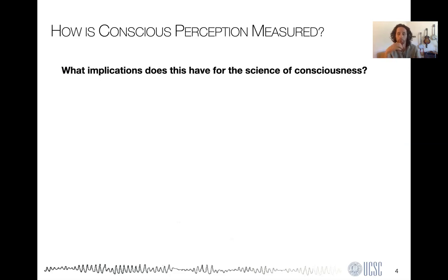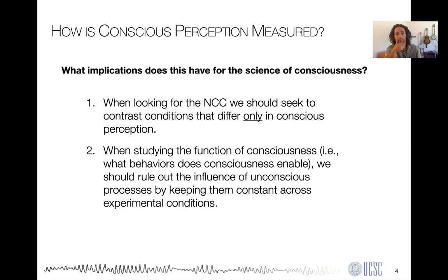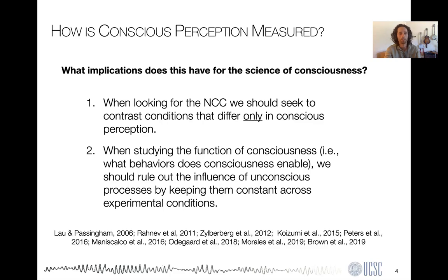So conscious perception is not equal to the capacity to discriminate a stimulus; unconscious processes can be quite sophisticated and can even suffice for fairly accurate discrimination behavior. This means when looking for neural correlates of consciousness using fMRI, EEG, or intracranial recordings, we should find contrasts between conditions that differ only in conscious perception and not in information processing. This point has been driven home by Hakwan Lau, Ariel Zilberberg, Megan Peters, Brian Maniscalco, Brian Odegaard, Jorge Morales, Richard Brown, and many others.